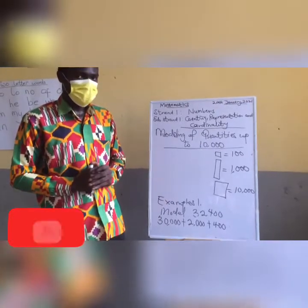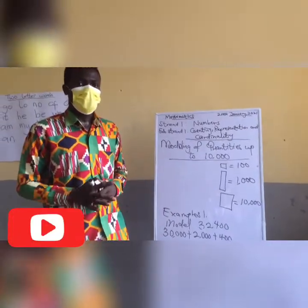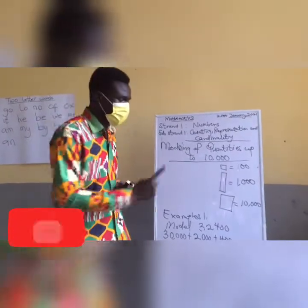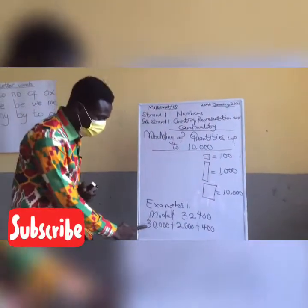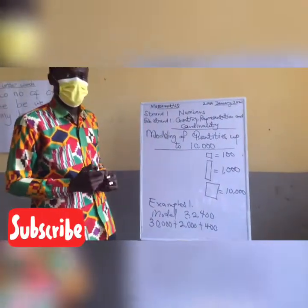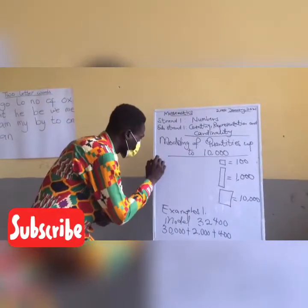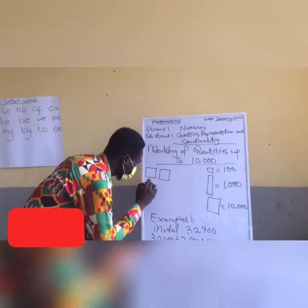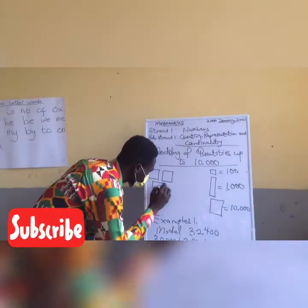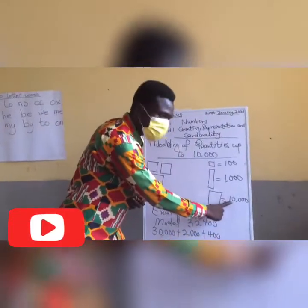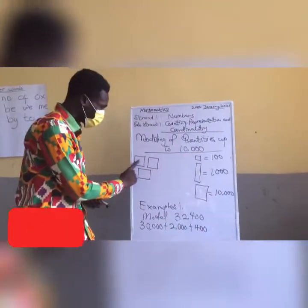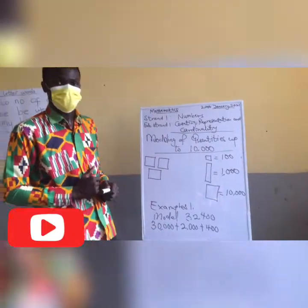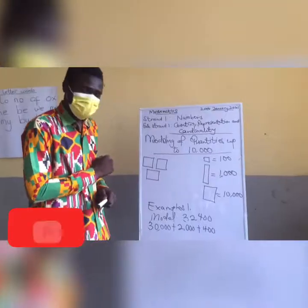Three flats — because one flat stands for 10,000. So if 10,000 gives me one flat, then 30,000 gives me three flats. I'll draw my three flats. One flat is 10,000, so: 10,000, 20,000, 30,000. We are done with the 30,000.